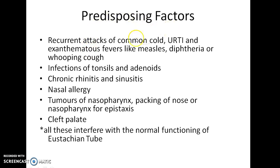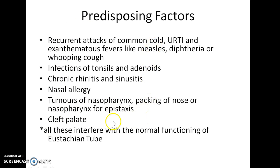What are the predisposing factors for this disease? Recurrent attacks of common cold, upper respiratory tract infections and exanthematous fevers like measles, diphtheria or whooping cough, infections of tonsils and adenoids, chronic rhinitis and sinusitis, nasal allergy, tumors of nasopharynx, packing of nose or nasopharynx for epistaxis, and cleft palate. All these interfere with the normal functioning of the eustachian tube and thus facilitate the development of acute suppurative otitis media.